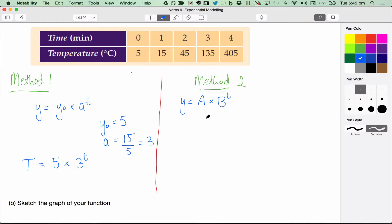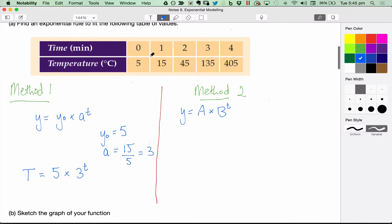What we need to do here is use two data points. So we use, it's always a good idea to use the first two. So the first one is 0, 5. I'm going to sub 0, 5 into this equation here. 5 equals a times b to the 0. And b to the 0 is 1. So a equals 5. So we can rewrite this now, knowing that a is 5.